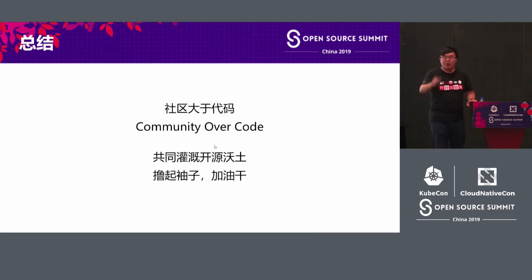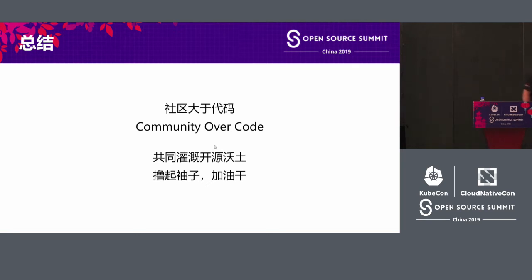Talk is cheap. So let's keep five minutes for Q&A. Any questions? In Chinese mainland, people work 996 — have you heard about 996? They work 9 to 9, six days a week, and then there's traffic jam — they get home at 11, and the next morning go back to work. So how can they have time to do anything for the open source community? What's your suggestion?